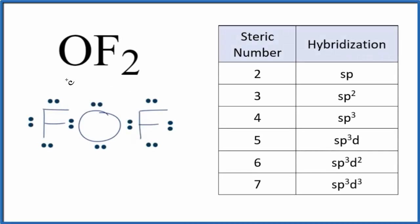When we look at the hybridization for OF2, this is oxygen difluoride, we're trying to figure out how the atomic orbitals, the s and the p orbitals on the central oxygen atom, how they mix and then how those mixed orbitals overlap with the other atoms, with the fluorine atoms here.